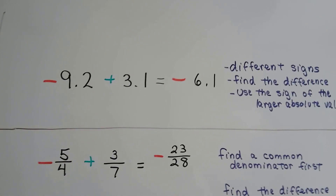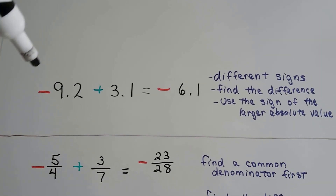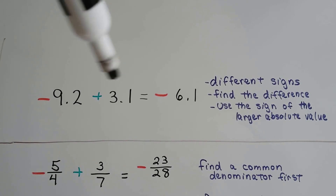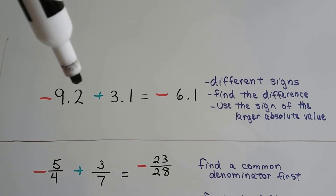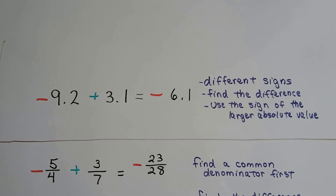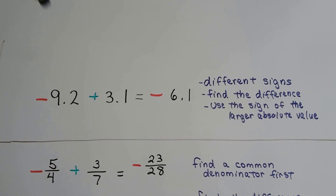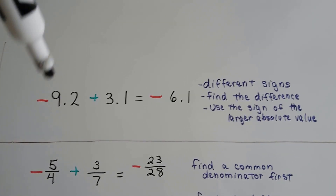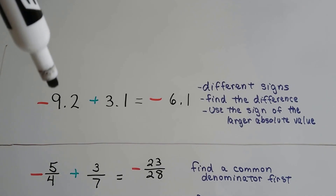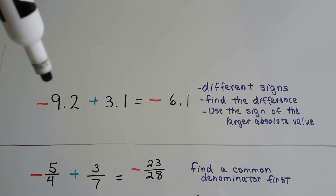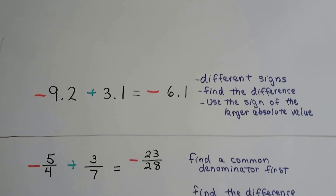When you're dealing with decimals, we have different signs here. We have a negative 9.2 and a positive 3.1 that we're adding together. We find the difference between these two numbers: 6.1. And we use the sign of the greater absolute value. That 9 has a greater absolute value — it's farther from zero on the number line — and it's a negative, so our answer is going to be a negative.